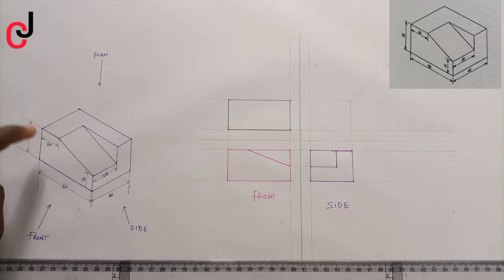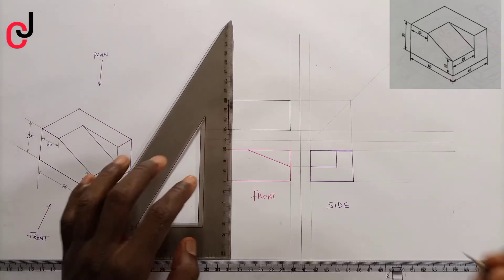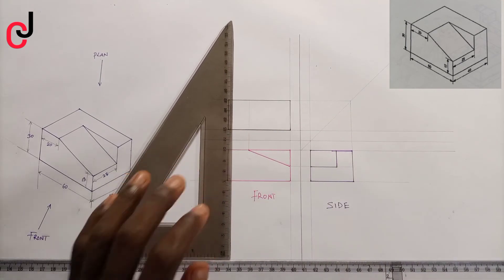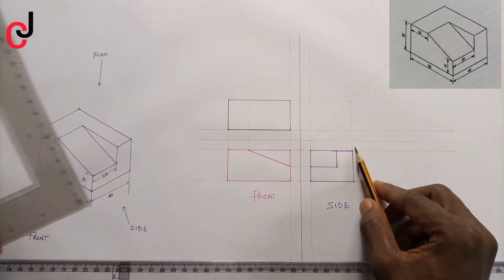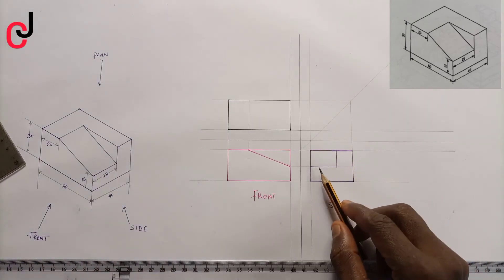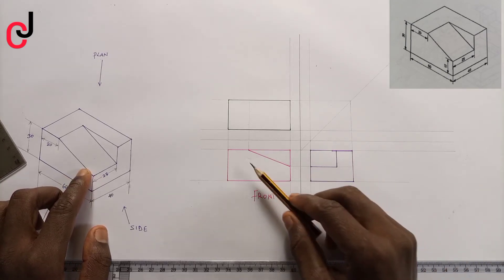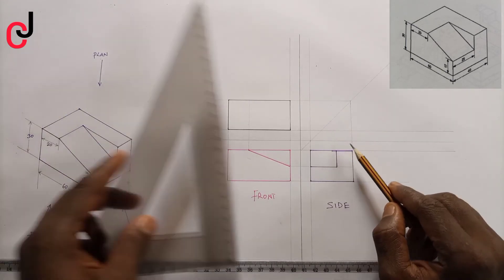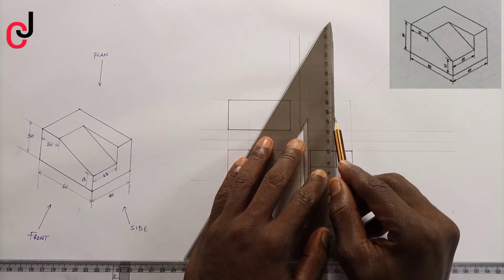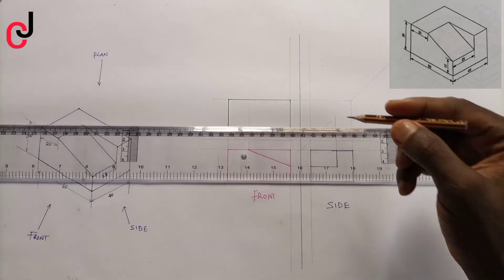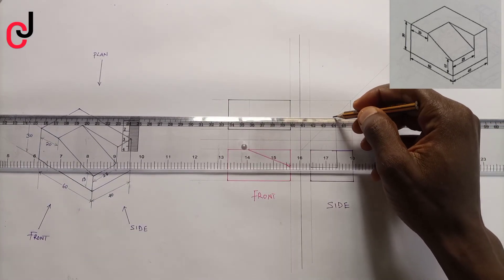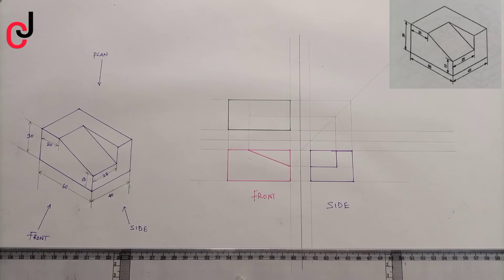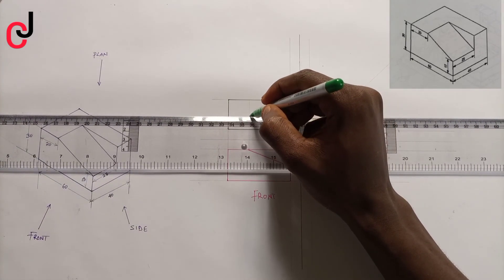From our plan, when you're looking at it from the top we have 20 mm, so project this 20 mm point upward. This is also the 20 mm from the side view — this is a slant point, so project it up. When it hits our 45-degree line, we move to my left. You can see it hits this point over here, so outline using my green pen so we can see properly.